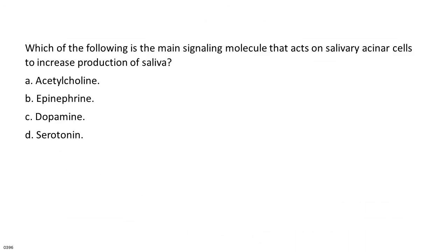Which of the following is the main signaling molecule that acts on salivary acinar cells to increase production of saliva? a. Acetylcholine. b. Epinephrine. c. Dopamine. d. Serotonin.